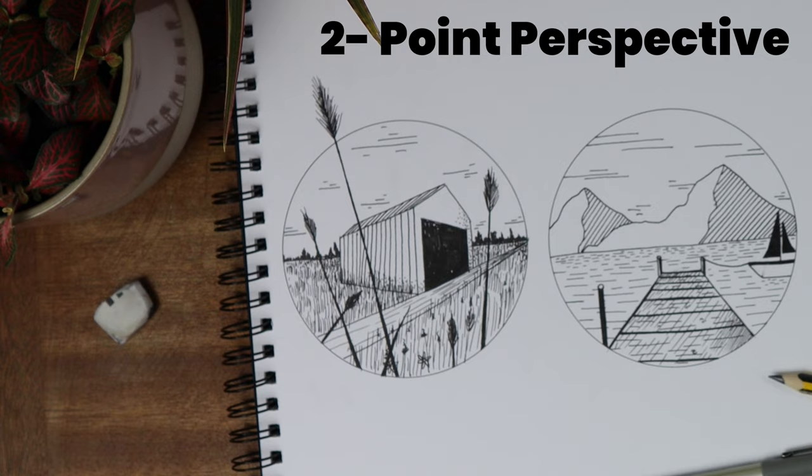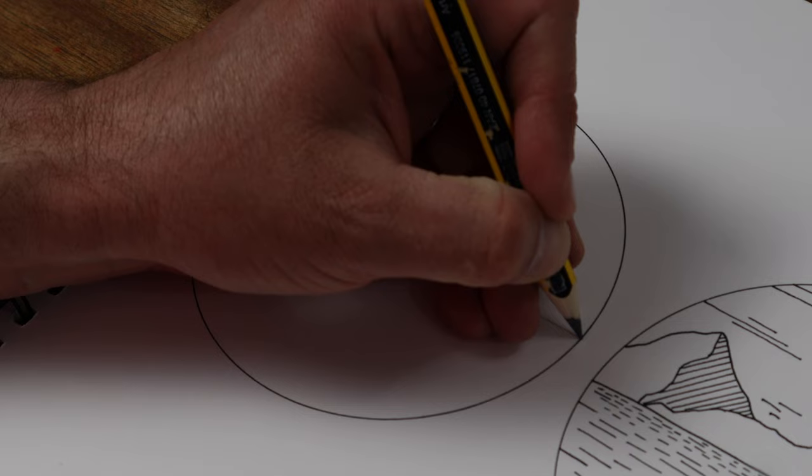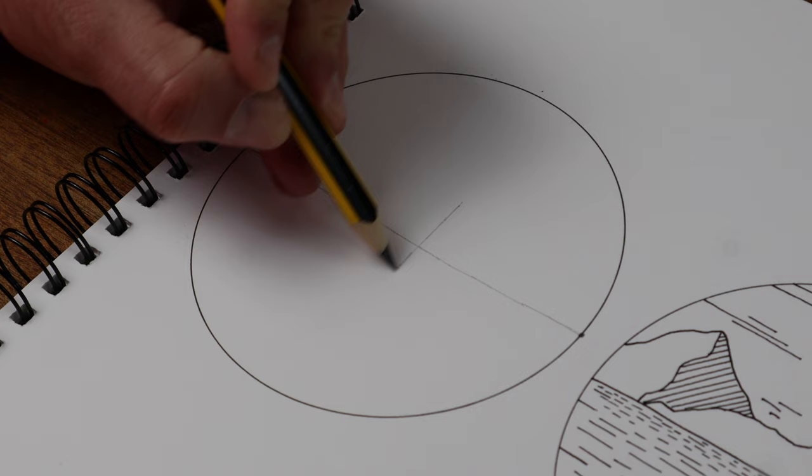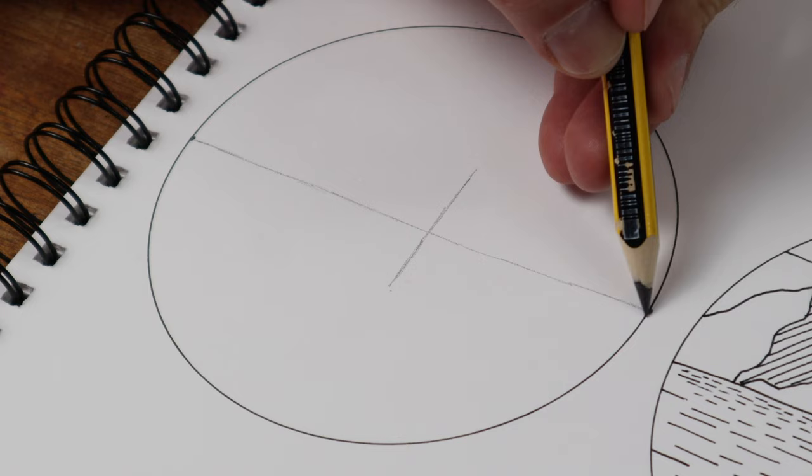This drawing involves two vanishing points at each end of the horizon line. Draw a small vertical line in the middle, then join the top and bottom of the line to each vanishing point.